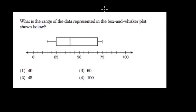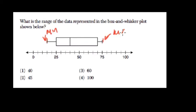What is the range of the data represented in this box and whisker plot? We'll just use these two endpoints because this is the minimum and this is the maximum right here. Max minus min is always your range.